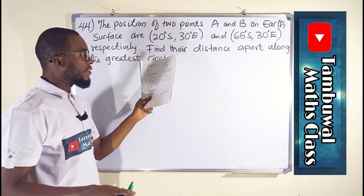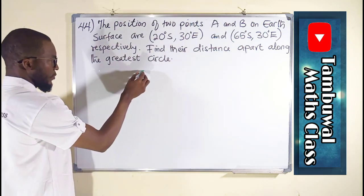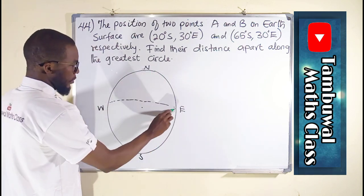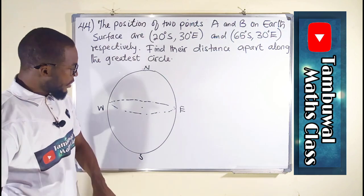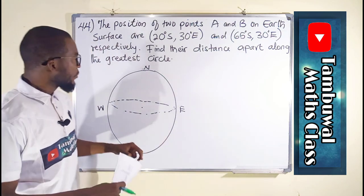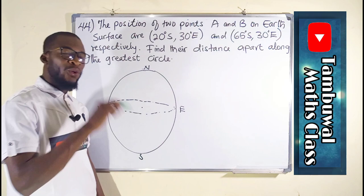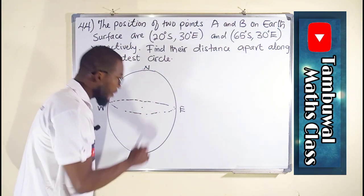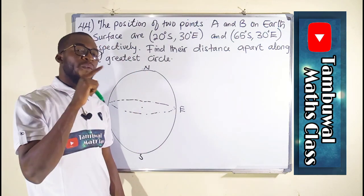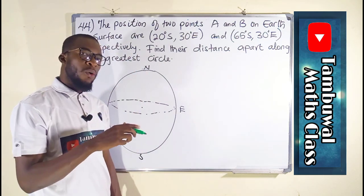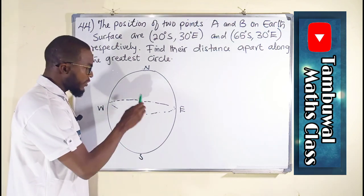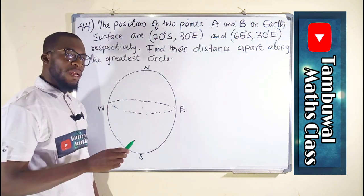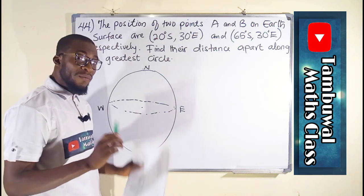Before I explain this, let me sketch the Earth. This is just a rough sketch of an Earth. Longitudes are those lines that pass through the Earth's surface from north to south or south to north, forming a complete cycle of equal radius. Latitudes are those lines that pass through the Earth's surface from west to east or east to west, forming a complete cycle of different radius.